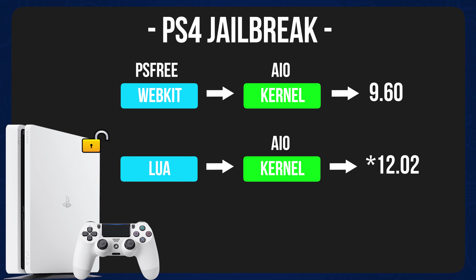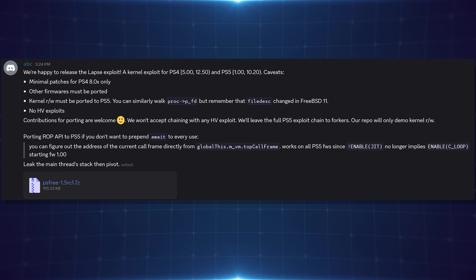It's only working on 8.0 right now and will get ported to other firmwares fairly quickly. To get it working on higher firmwares, we'll need to chain it with a different userland exploit — specifically the Lua exploit, which works on the latest firmwares for PS4 and PS5. Still a lot of work to go until we have a working jailbreak running GoldHen on higher PS4 firmwares and things like K-Stuff and ETA Hen on higher PS5 firmwares.